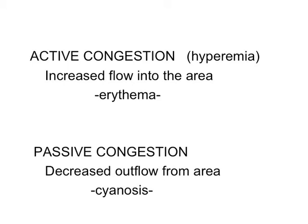A prime example of active congestion is the hyperemia associated with the acute inflammatory reaction. The rubor — the redness of the acute inflammatory reaction — is active hyperemia or active congestion. You know it really is redness, and when we talk about redness of the skin we talk about erythema. With active congestion, you're pouring more blood in, so it tends to be a little bit redder.